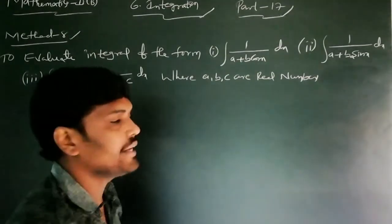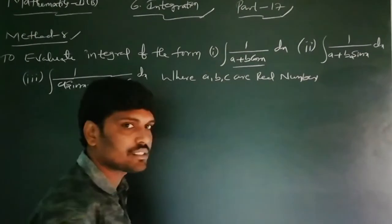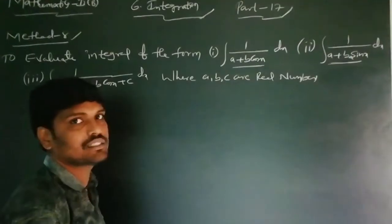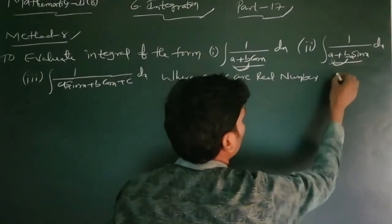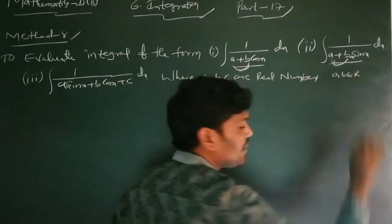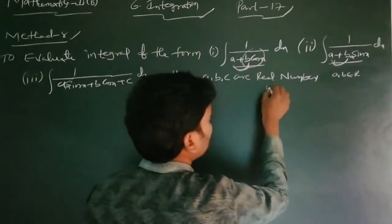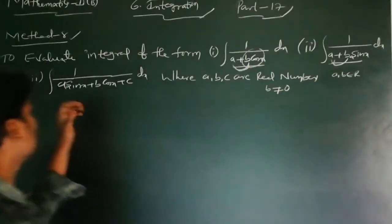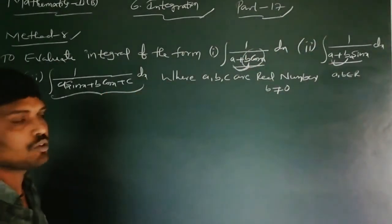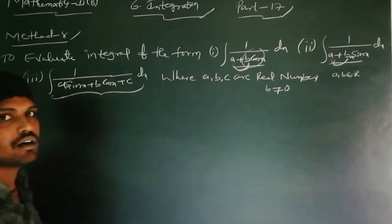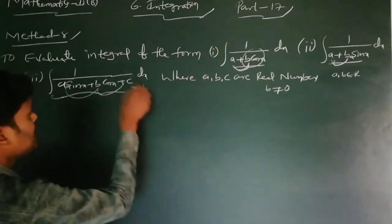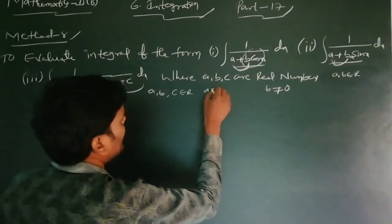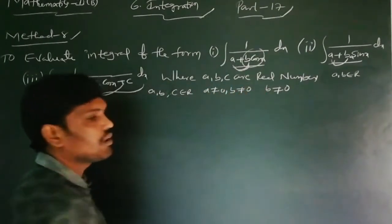Method 8 covers integrals of the form: 1/(A + B cos x) dx or 1/(A + B sin x) dx. In these two cases, A and B are real numbers and B must not equal zero. There is also a third case — not in the textbook — which is the integral 1/(A sin x + B cos x + C), where A, B, C are real numbers and both A and B are not equal to zero.